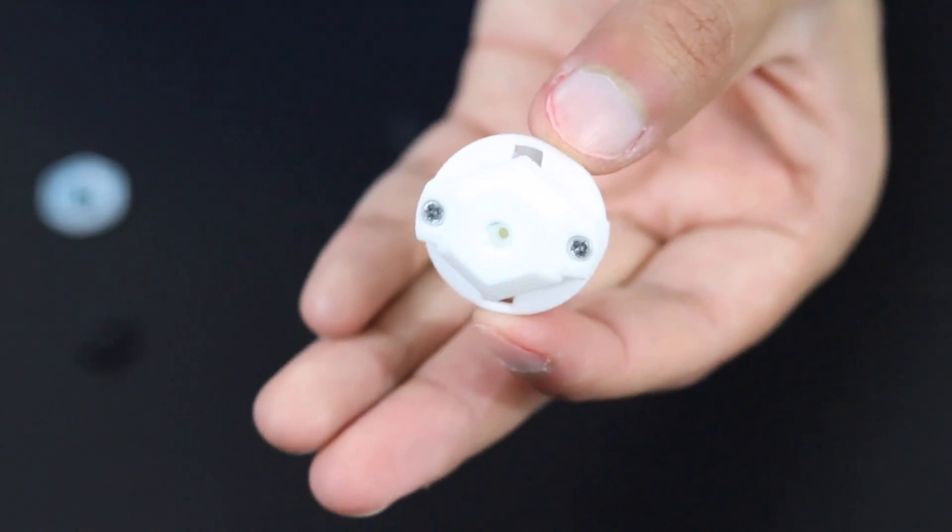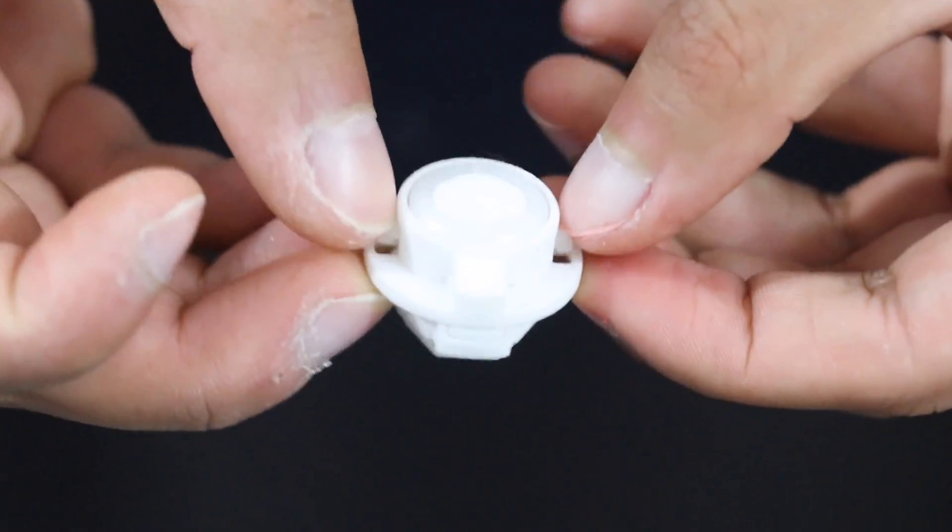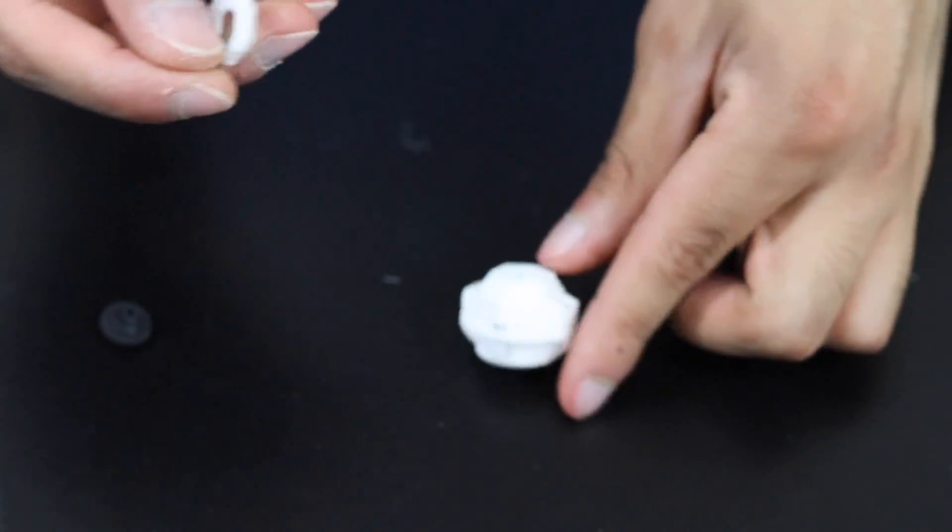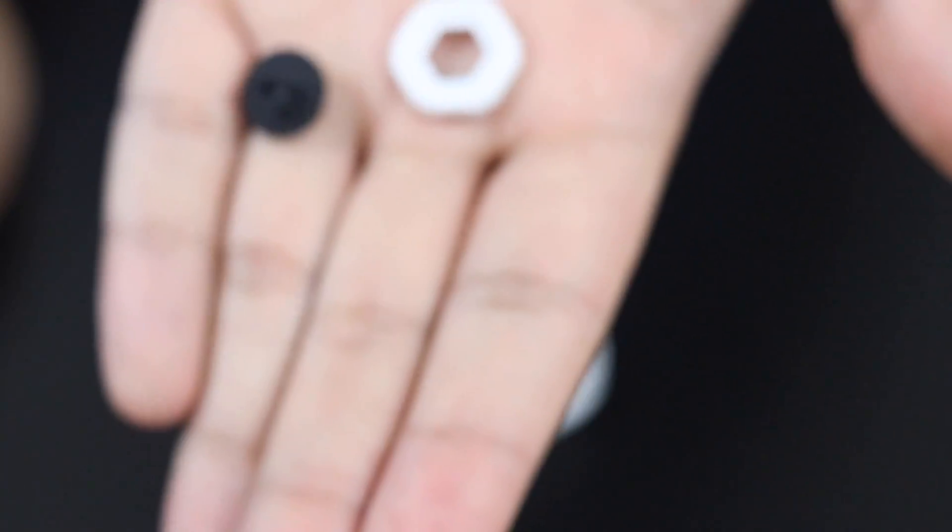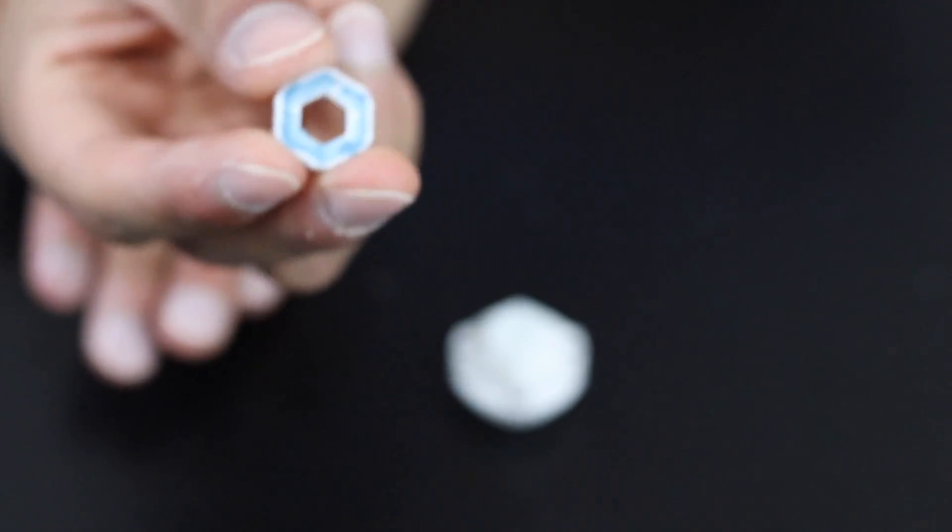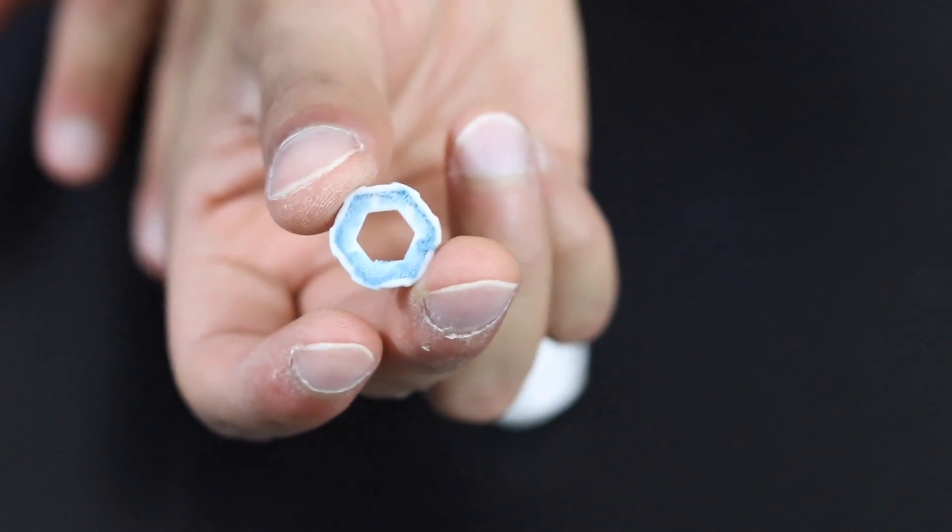And voila, we got the core of the driver done now. As you can see it works, it bounces up and down like it's supposed to. Lastly is the tip of the driver. There's two main components here: one shaped like a hexagon and then the actual tip. This piece is supposed to hold the tip in place.